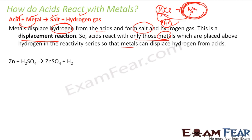As an example of this acid-metal reaction: you take zinc and add H₂SO₄ (sulfuric acid). Zinc is more powerful than hydrogen, so it will displace hydrogen. Hydrogen comes out, and you get ZnSO₄ — zinc sulfate — as the salt. Zinc has displaced hydrogen from the sulfuric acid.